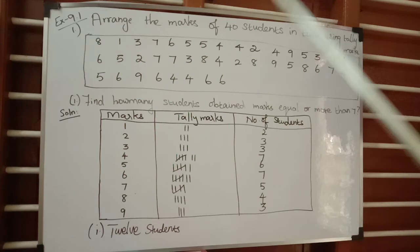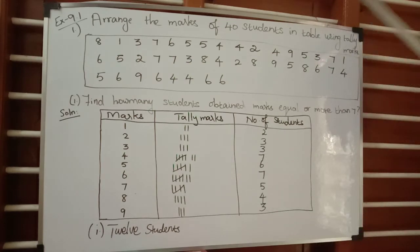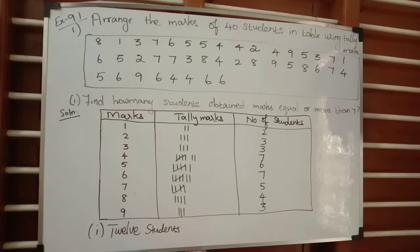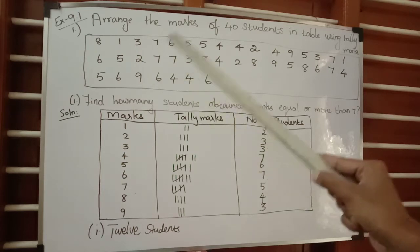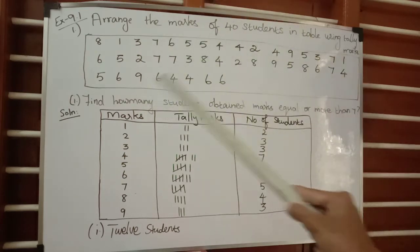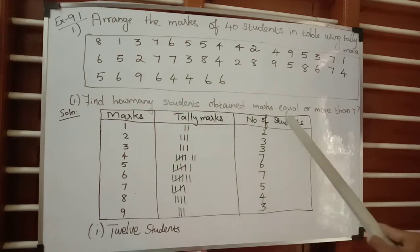Before going into the solution, we need to know what tally marks are. Tally marks is a group of five lines in which the first four lines are drawn vertically and the fifth line is drawn diagonally over the previous four lines. Now I am going to tabulate these marks using the headings: marks, tally marks, and number of students.